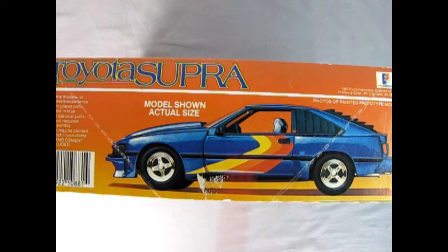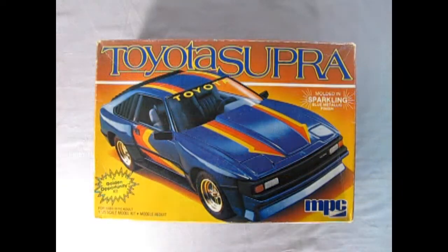On this side of the box we get a showing of the model in the actual size. It says for the modeler of moderate experience, bright plated parts molded in blue, many optional parts, cement required for assembly. Model may be painted to match the illustrations, and paint and cement is not included. This is also a Fundimensions kit which came out in 1983.